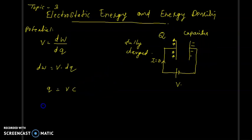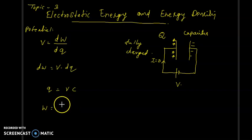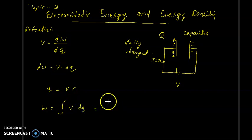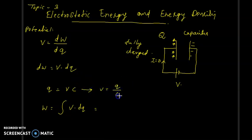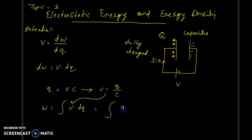Then, the work done W is nothing but the integration of V dq. Substituting from this expression, V is nothing but Q by C. Substituting V here, this expression becomes Q by C into dq.